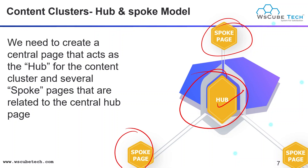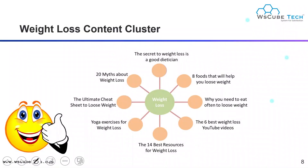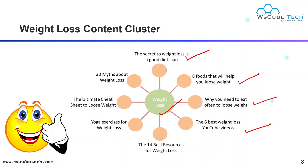Here we need to create a central page that acts as a hub for the content cluster, and several spoke pages that are related to the central hub page. For example, the central idea is weight loss, and corresponding spoke pages include: the secret of weight loss and a good dietitian, eight foods that will help you lose weight, why you need to eat often to lose weight, the six best weight loss YouTube videos, yoga exercises for weight loss, the ultimate cheat sheet to lose weight, and 200 myths about weight loss.